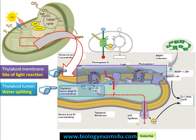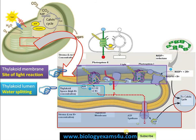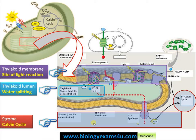The ATP synthase is oriented towards the stroma, so after the light reaction the energy is available in the stroma as NADPH and ATP. The Calvin cycle, or light-independent reaction, is where carbon dioxide is converted to carbohydrate. The site of the Calvin cycle is the stroma, where ATP synthesized by the light-dependent reaction and NADPH are utilized for the reduction of carbon dioxide to carbohydrate.